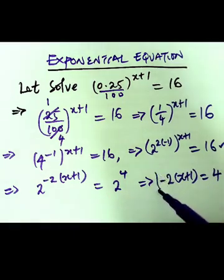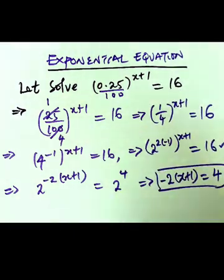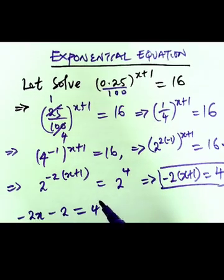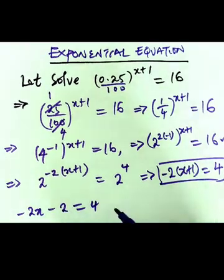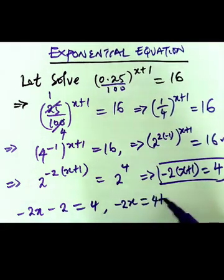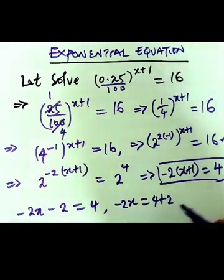We are going to solve this further. We have -2x by opening the brackets, then minus 2 equals 4. We can have -2x equals 4 plus 2, which gives us -2x equals 6.